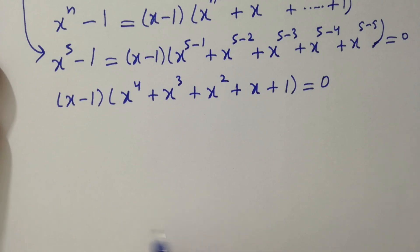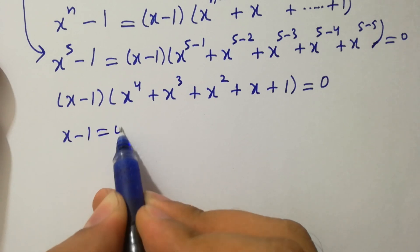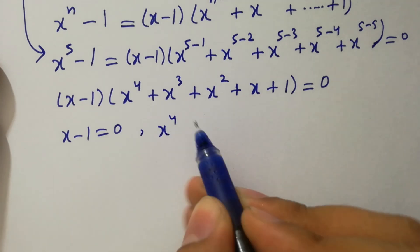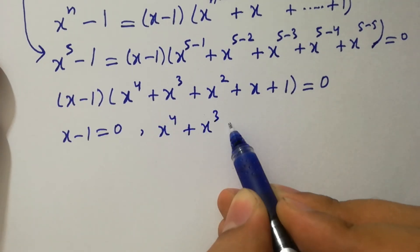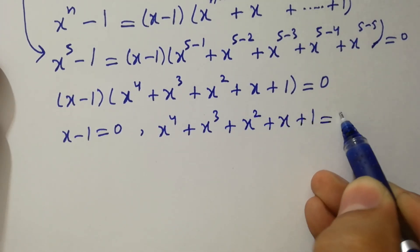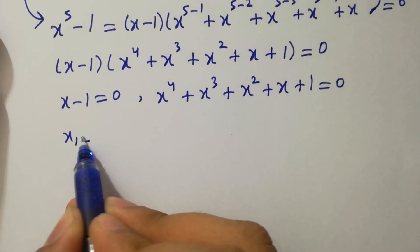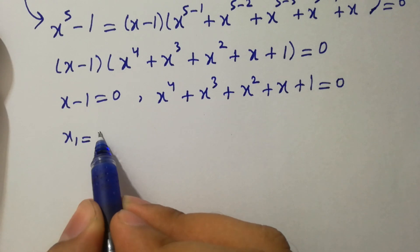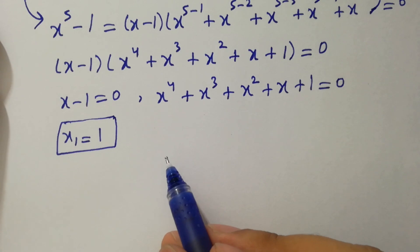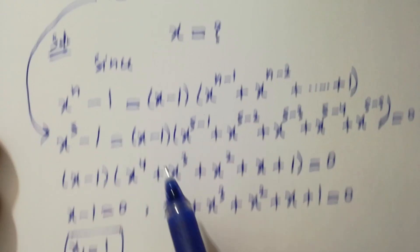Either x minus 1 equals 0, or x to the power 4 plus x cubed plus x squared plus x plus 1 equals 0. From the first factor we get x equals 1. But there are more solutions because the equation has 5 roots — it will have 5 solutions.